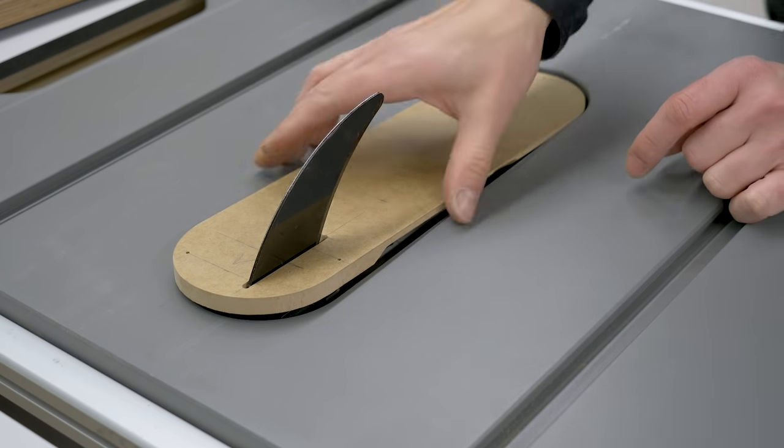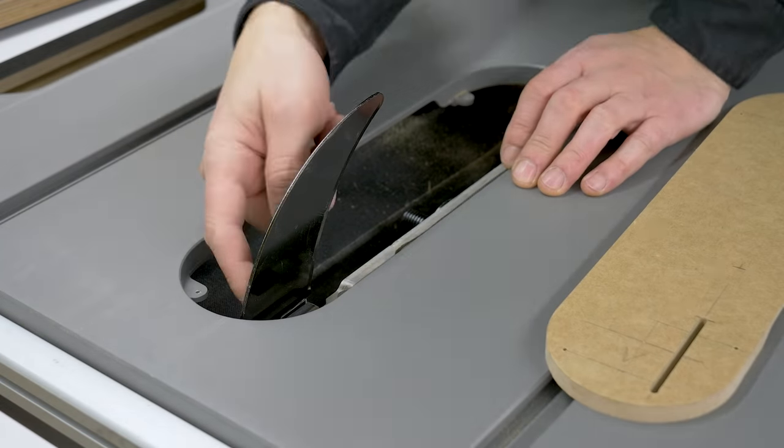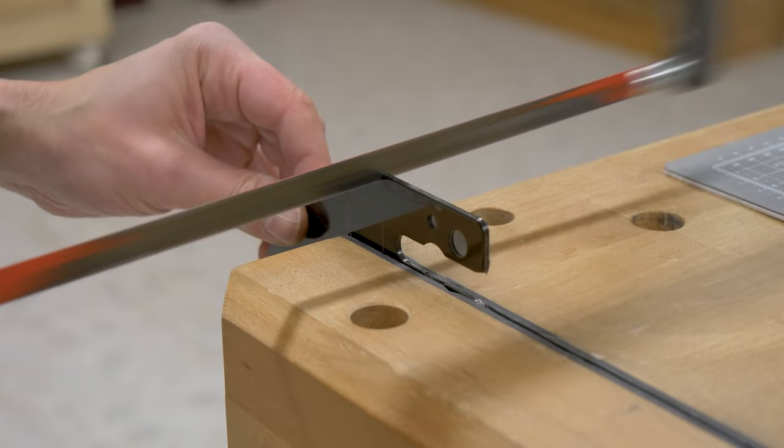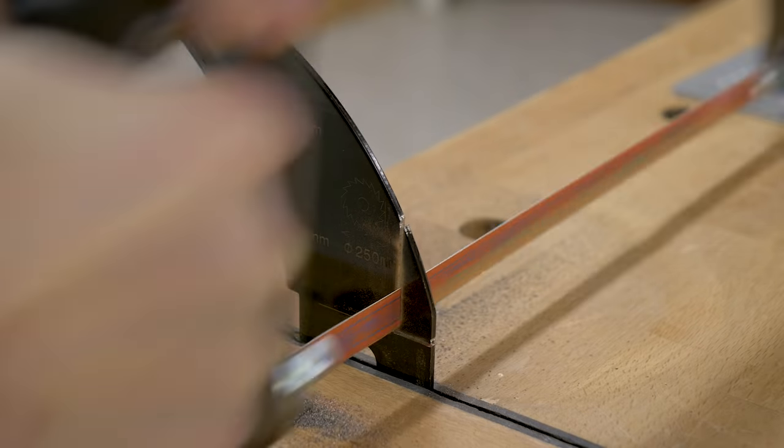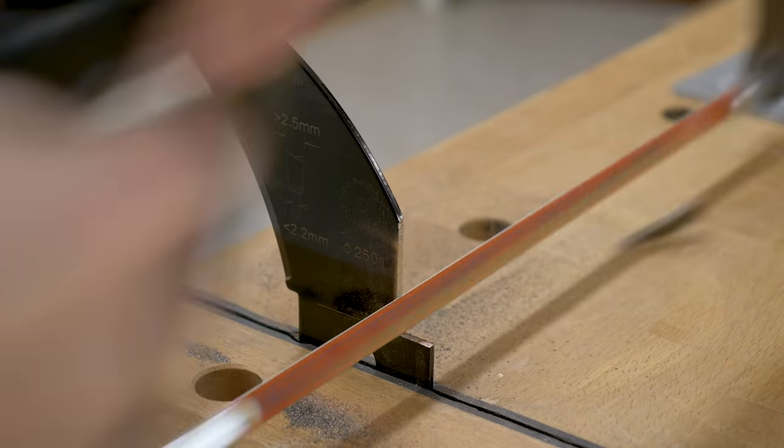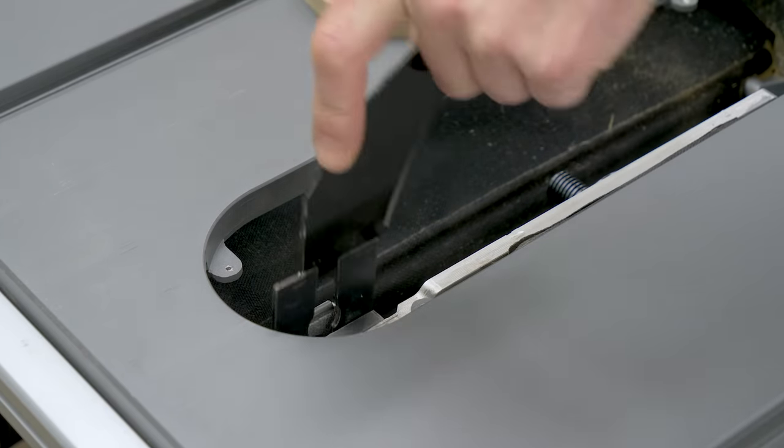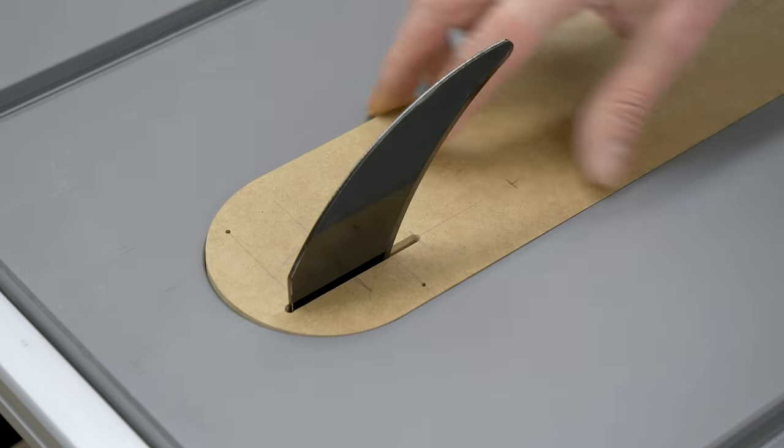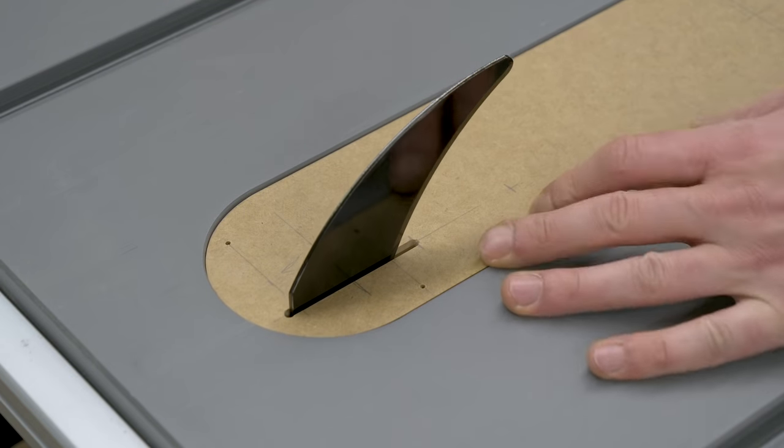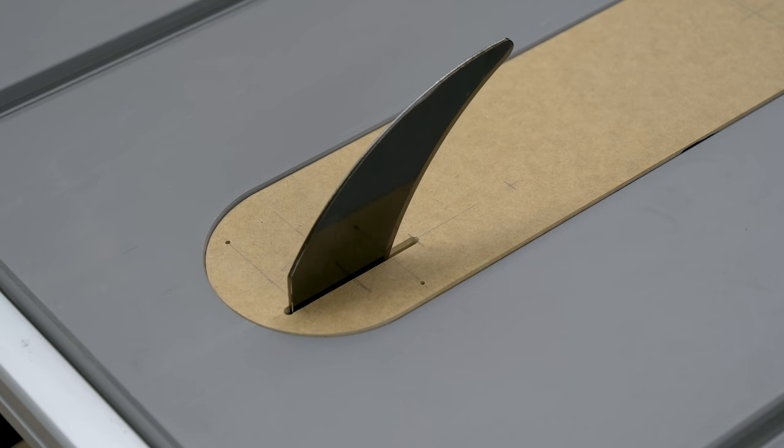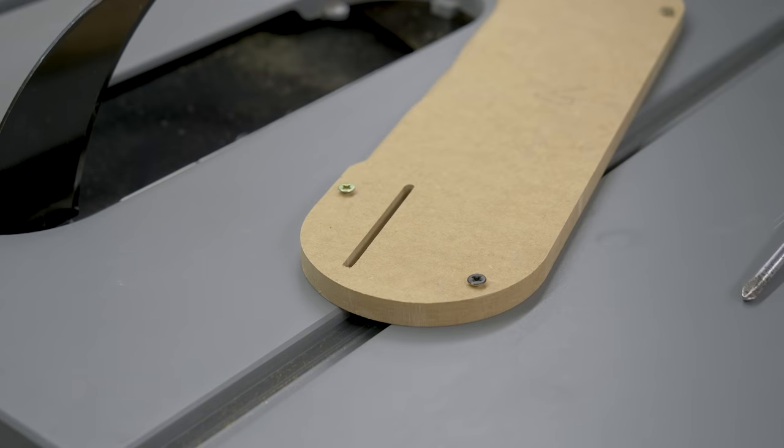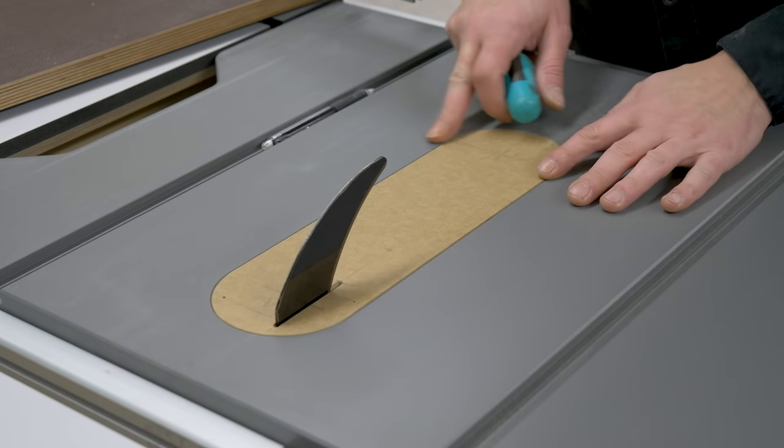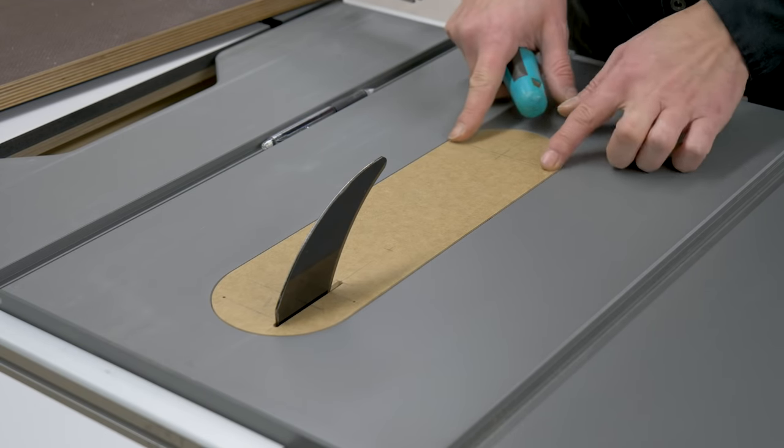It's time to cut the riving knife so that we can use this type of insert without a cut in the back. I place the bolts that allow me to adjust the insert's height and make a cut for the blade by raising the blade itself very slowly.